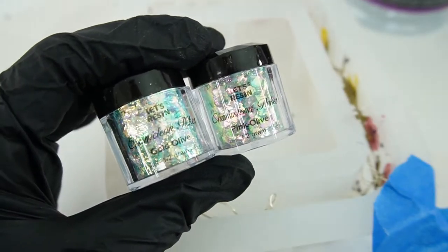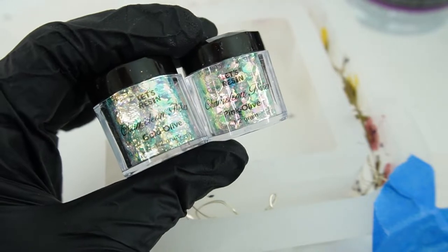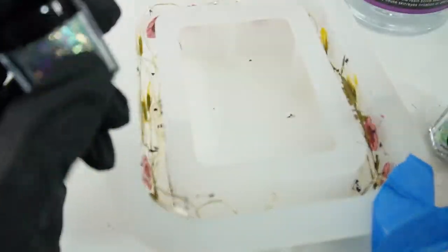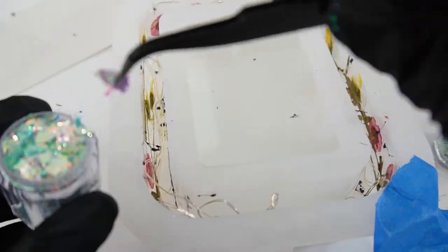Next, we're going to add some flakes. I'm going to be using gold iridescent and pink iridescent. The gold iridescent is going to be on the bottom and the pink iridescent on the top. I'm not going to add too much.